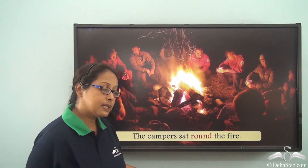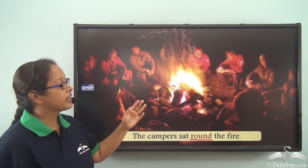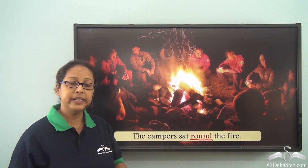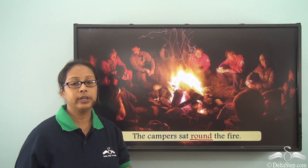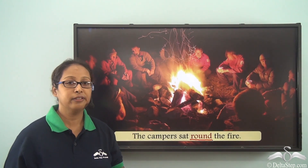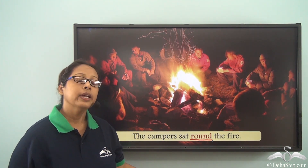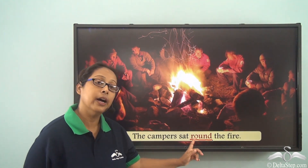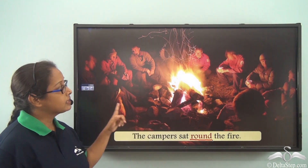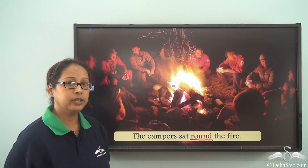The campers sat round the fire. The preposition is 'round.' The fire is in the middle and the campers are sitting all around it, encircling the fire — so we use 'round.' We can also say the campers sat around the fire, meaning they are sitting on all sides of the fire. Both would be correct options here.